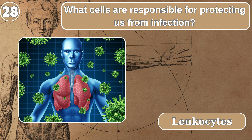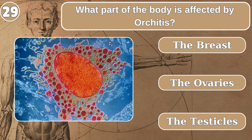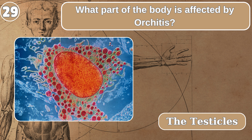What cells are responsible for protecting us from infection? Leukocytes. What part of the body is affected by orchitis? The testicles.